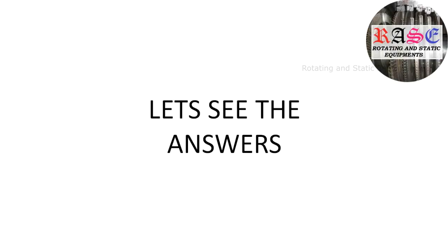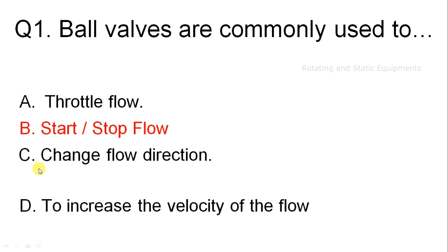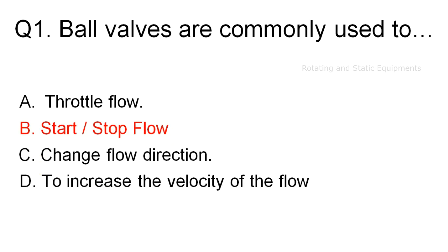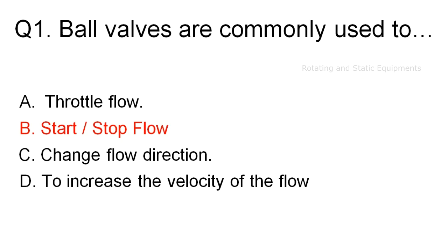Now let us see the answers. Question 1: the correct answer is Option B — start and stop flow. Commonly, ball valves are used to start and stop flow applications. A ball valve is an on-off or shut-off valve that controls the flow of a liquid or gas by means of a rotary ball having a bore. By rotating the ball a quarter turn around its axis, the medium can flow through or is blocked.